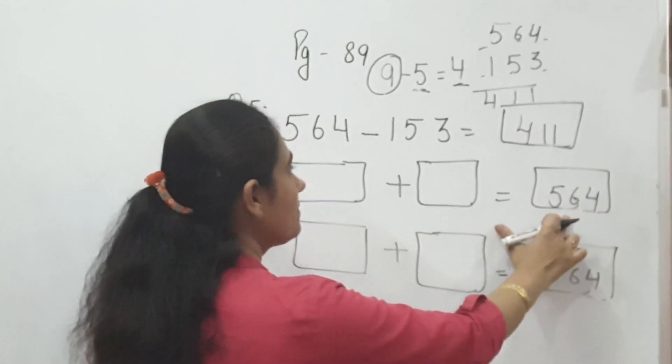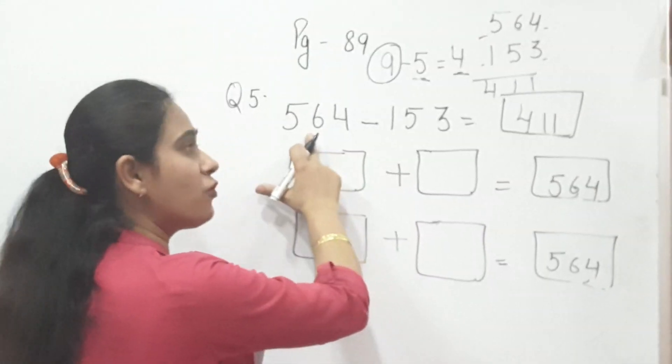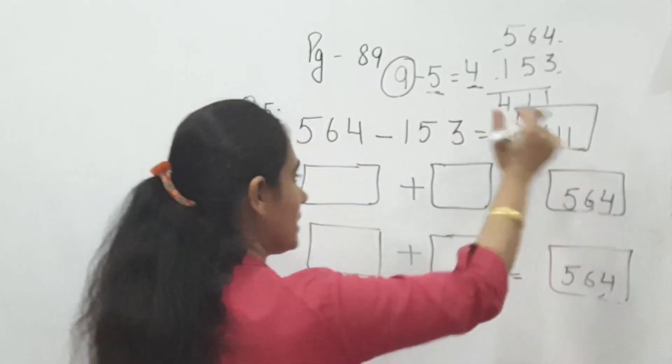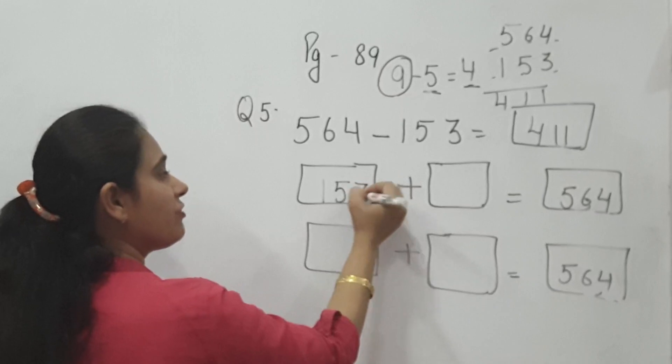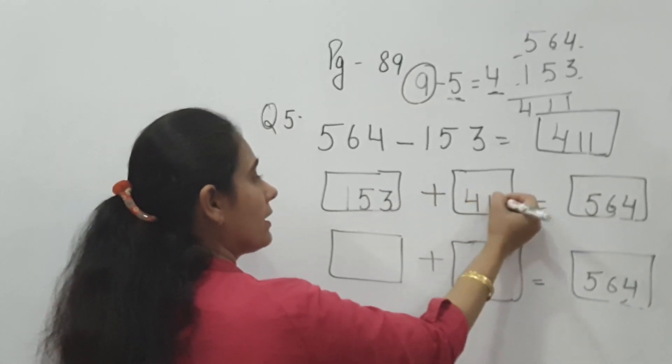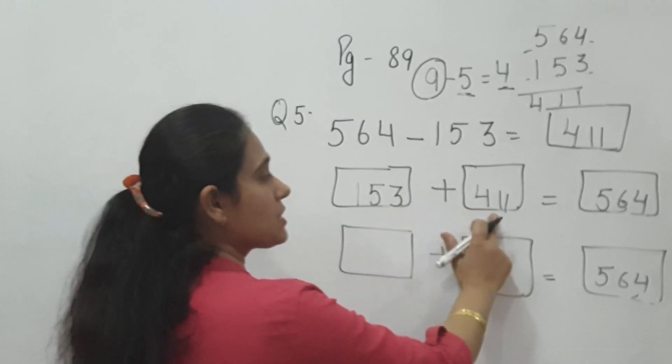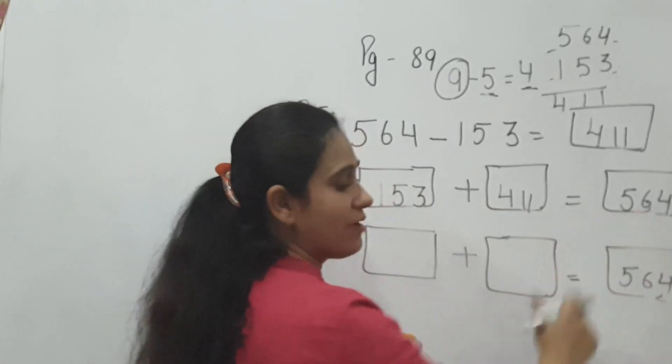Here, 564 is given. This plus this. So we will write here 153 plus 411. This plus this is equal to 564.